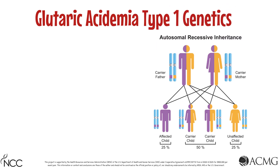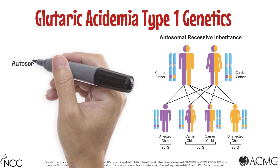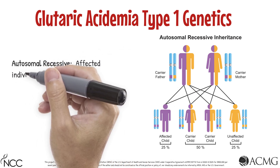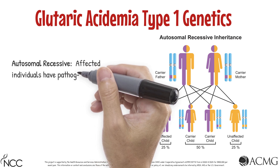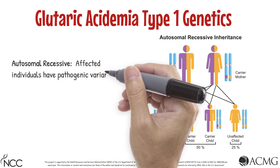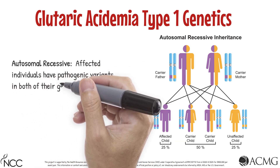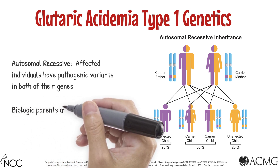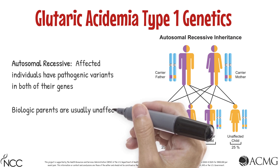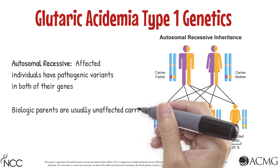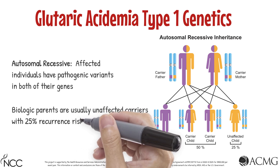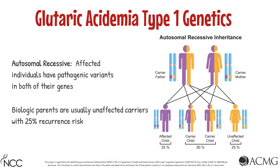Glutaric Acidemia Type 1 is inherited in an autosomal recessive manner, meaning that only infants with a pathogenic variant in both of their GCDH genes will be affected. Parents with a child with Glutaric Acidemia Type 1 are carriers and are unaffected, but have a 25% recurrence risk with any future children they have together.